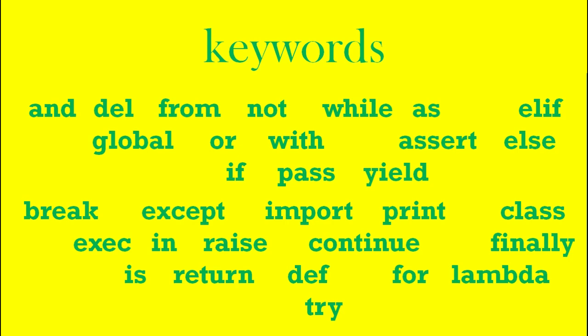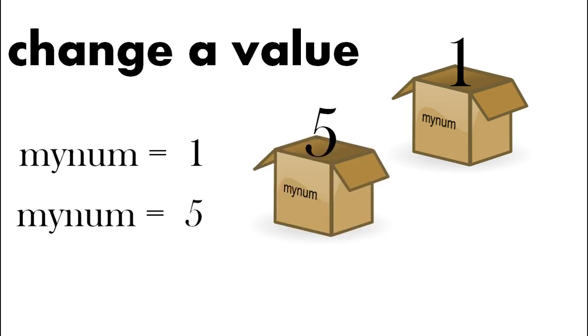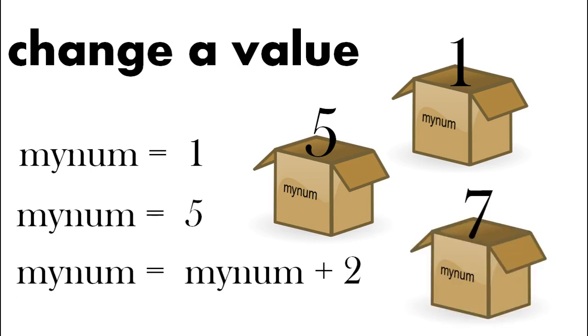You can change the value of a variable. So here we have mynum equals one. Here we have mynum equals five. And here we add two to the five. So mynum now equals seven.